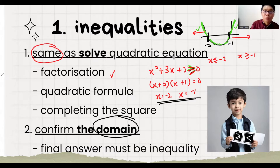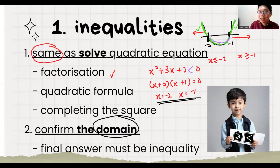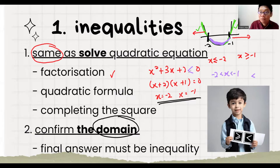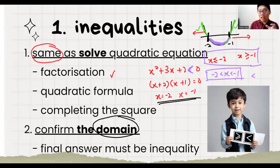If we change the question to less than, we choose the region below the x-axis. That region is in between minus 2 and minus 1. Since it's one region only, x is between minus 2 and minus 1, with the inequality symbol's sharp point pointing toward the smaller value, minus 2. If there's no equal sign in the question, we also leave it without an equal sign. So the final answer is either both outer sides or the middle part.